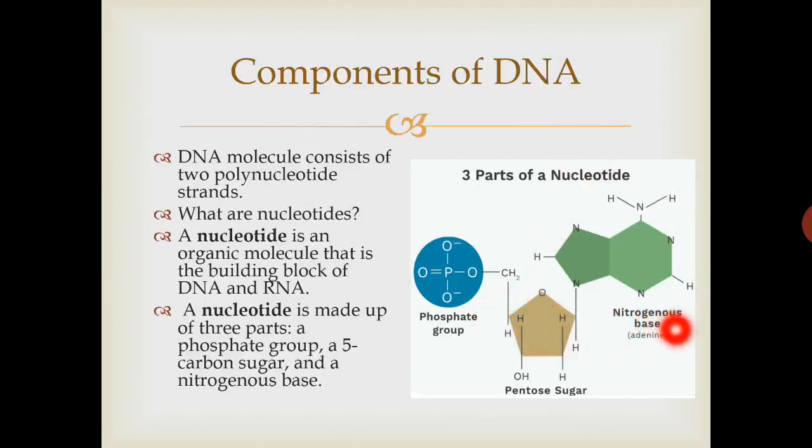...pentose means five carbon sugar or five cornered ring structure as shown in this figure, and a nitrogenous base. A nitrogenous base contains nitrogen molecules as well as carbon and hydrogen. So a nucleotide consists of all these three basic components. DNA is a polynucleotide strand, so multiple nucleotides are present in one strand of DNA and there are total two strands in a DNA structure.